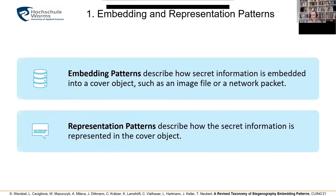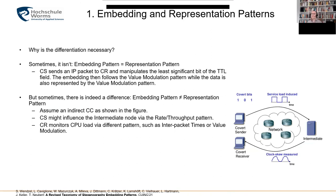Our approach first distinguishes between embedding and representation patterns. Embedding patterns describe how secret information is in fact embedded into the cover objects such as a file, image file, audio file, or network packets. Representation patterns describe how the secret information is then represented in that object — and in fact both can differ. While in many cases it's the same, for instance if you just modify the least significant bit of a protocol header field, for indirect patterns this can be different.